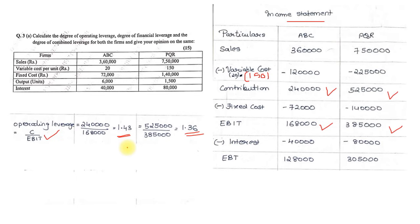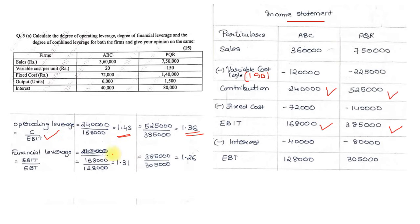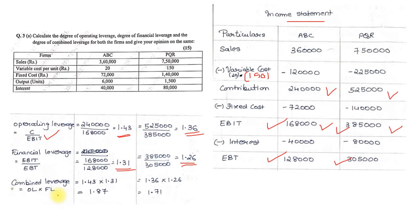Financial Leverage formula is EBIT divided by EBT. For ABC: 1,68,000 / 1,28,000 = 1.31. For PQR: 3,85,000 / 3,05,000 = 1.26. Combined Leverage is Operating Leverage multiplied by Financial Leverage. For ABC: 1.43 × 1.31 = 1.87. For PQR: 1.36 × 1.26 = 1.71.